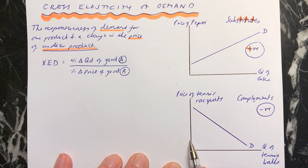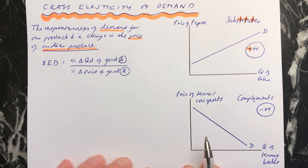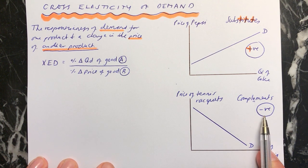If the price of tennis rackets falls, a lot more tennis balls will be demanded, because the tennis rackets are cheaper. So they have this negative relationship, and we have a negative correlation. The XED value would be negative.